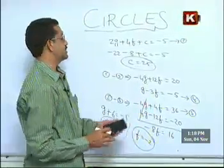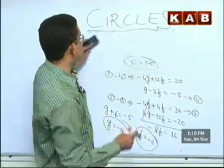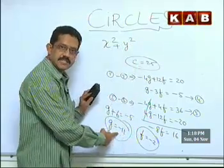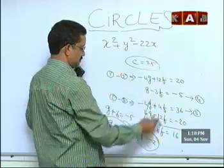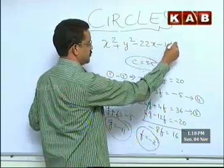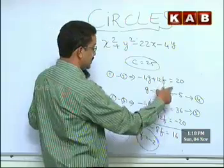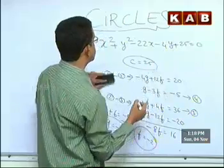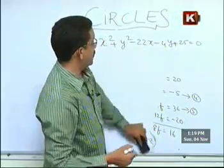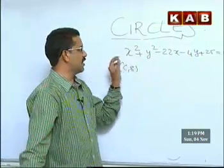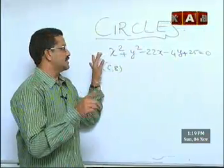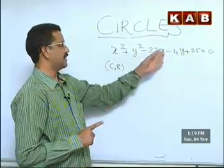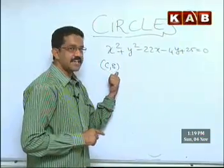You have the circle. The circle equation is x² + y² + 2gx + 2fy + C = 0. My g is -11, so 2gx = -22x. My f is -2, so 2fy = -4y. And my C is 25. So the equation of the circle is x² + y² - 22x - 4y + 25 = 0. This is the equation of the circle. The circle is passing through (1,2), (3,-4) and (5,-6). And it is also passing through (C,8). I want C.